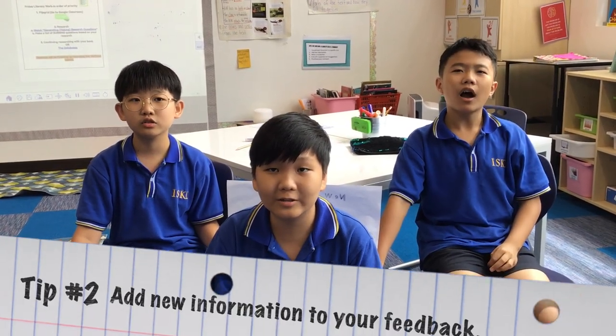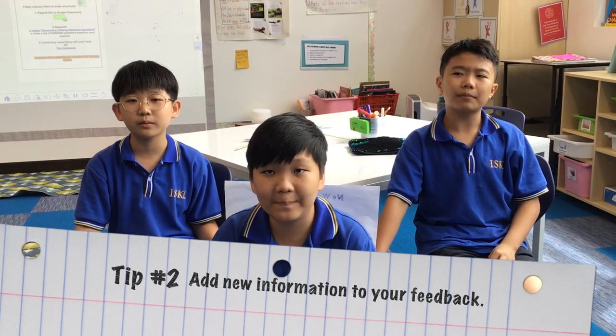Hey dudes, we're going to teach you about three tips on how to add new information to your feedback. The first tip is to tell the writer new information that is not from the piece of writing they wrote about. That gives new information for the other person to write about. The second tip is to give some fun facts to the writer about that topic. The last tip is to correct mistaken information and tell them where you got that information.